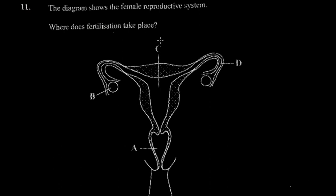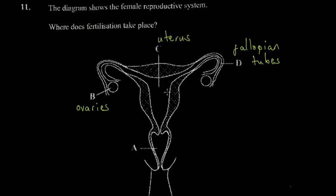Part C is the uterus, and part D is called the fallopian tubes — double-check the spelling on that. Part E is the ovaries, and you should know the function of each part. Part A is the cervix. Most students think it's the vagina, but it's not. One way to remember: immediately after the uterus you get the cervix, and then below that you get the vaginal opening.